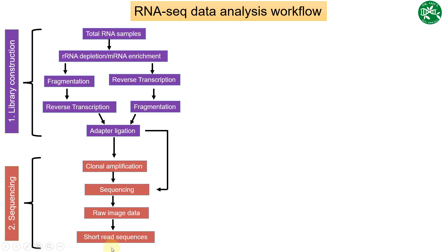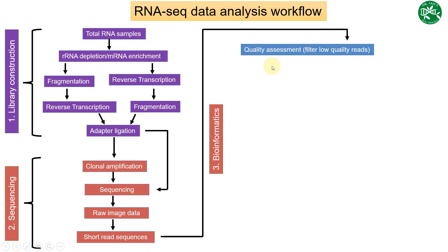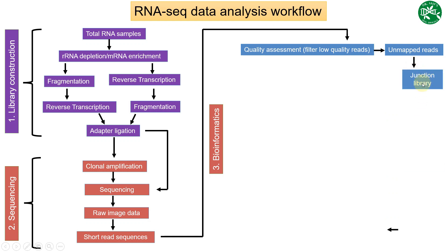Our third step, which is bioinformatic analysis, starts from these short read sequences and passes through a series of quality control assessment processes in which we usually filter our low quality reads. We try to reduce the unmapped reads by using a junction library, and after we have constructed our junction library, we sometimes directly map the reads to our reference genome after quality assessment.